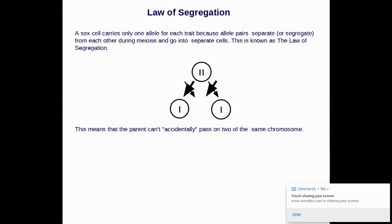There's this law of segregation, which says that a sex cell, which means for us, it would be sperm or egg. If we were talking about plants, it would be pollen or their ovary. A sex cell carries only one allele for each trait because the allele pairs separate or segregate from each other during meiosis. Remember, that was cell division when the cells divide and they go into separate cells. Remember, meiosis makes the sex cells. This is known as the law of segregation. So the alleles, when they're making the sex cells separate, so there's only 50% of the genes. This means that the parent can't accidentally pass on two of the same chromosomes.